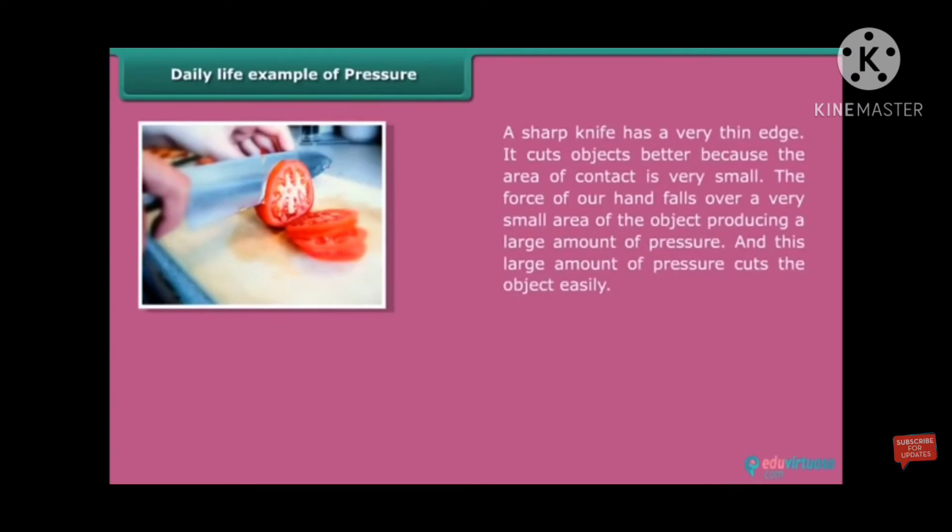A sharp knife has a very thin edge. It cuts the objects better because the area of contact is very small. The force of our hand falls over a very small area of object, producing a large amount of pressure. And this large amount of pressure cuts the objects easily.